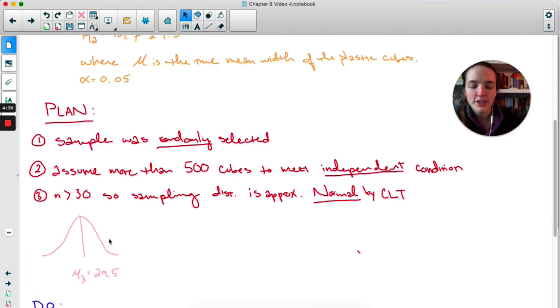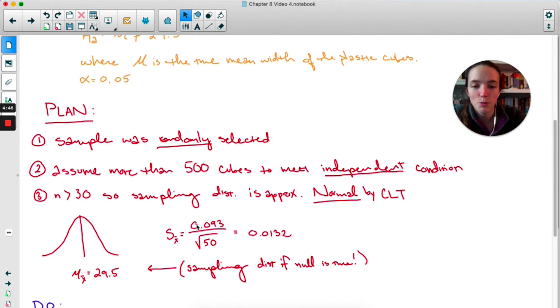Okay, now just like with proportions, I like to make a diagram. So approximately normal, and the mean of this sampling distribution is 29.5. This is the sampling distribution if we were to assume that the null is actually true. Before we get to do, like before, I'm just going to calculate my standard deviation.